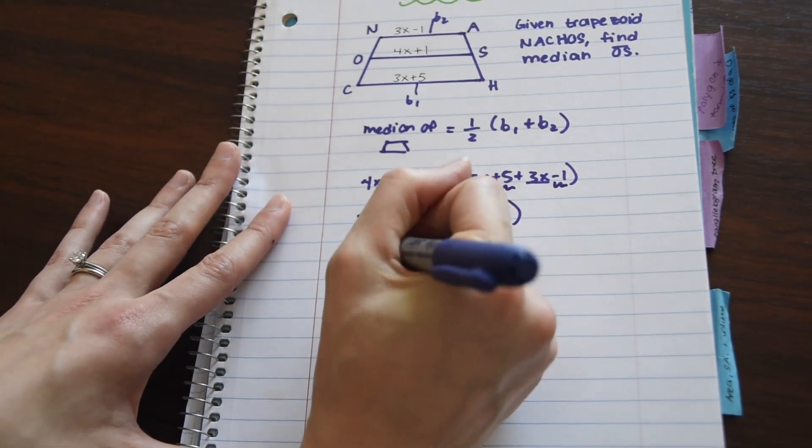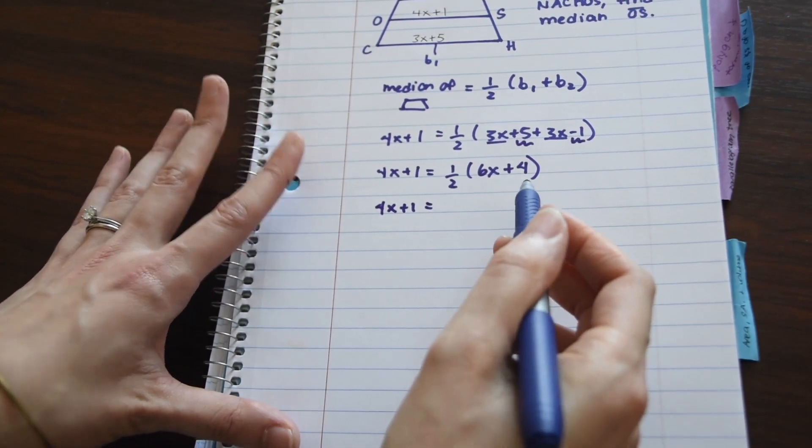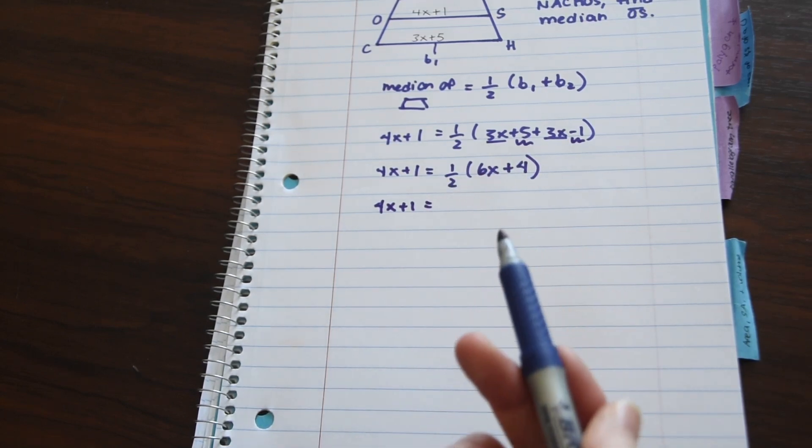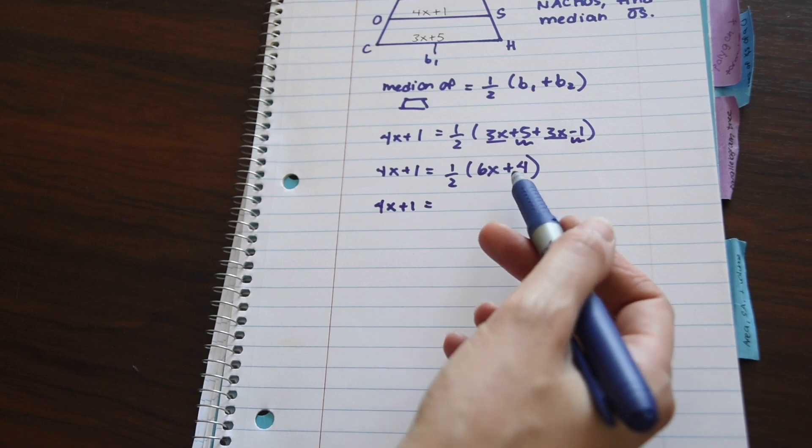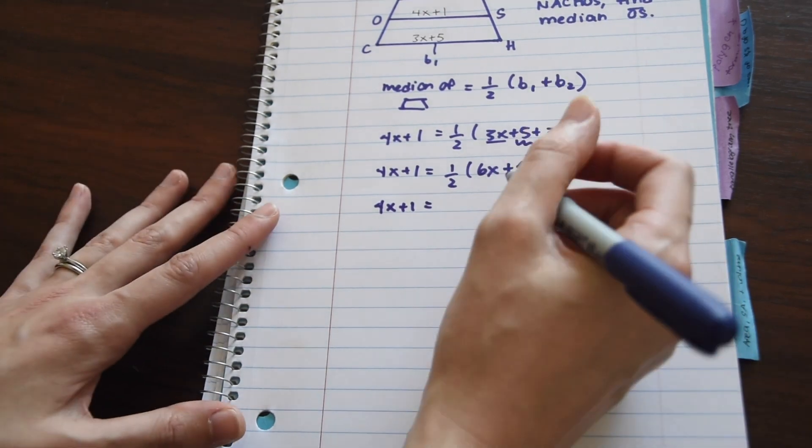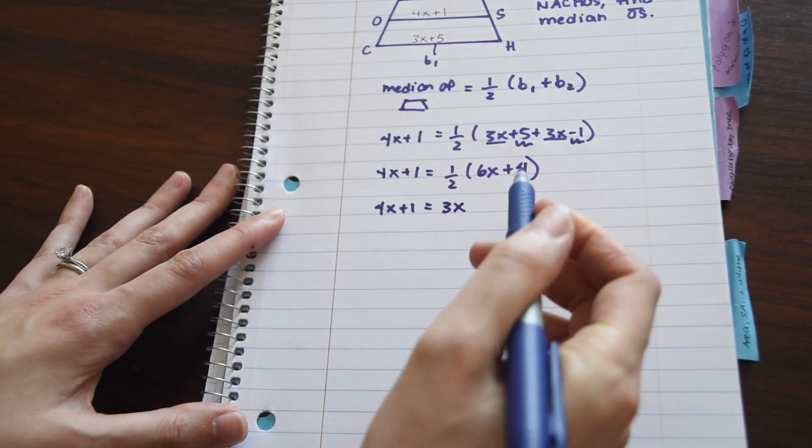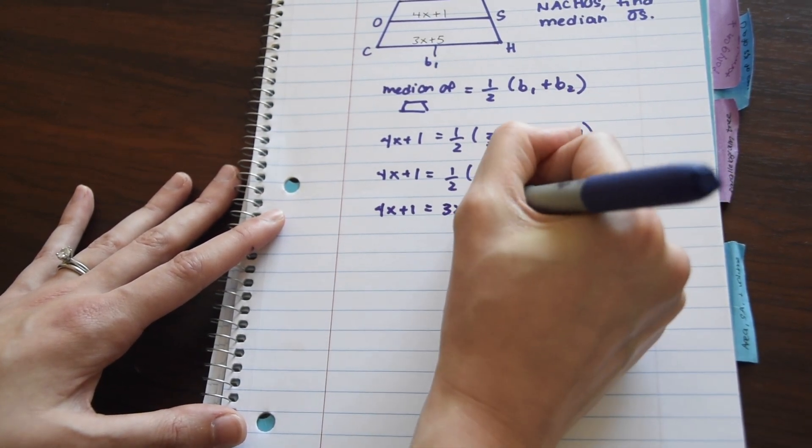Our next step is we're going to be multiplying 6X plus 4 times one half, or you could think of it as dividing 6X plus 4 divided by 2. So we have 6 divided by 2, which gives us 3X, and then 4 divided by 2, which gives us 2.